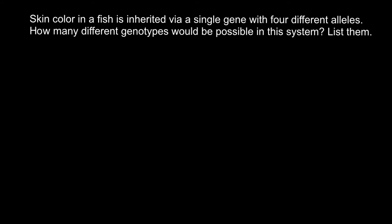Because we don't have too many alleles here, you can try to solve this problem by listing all the possible variants. So we have four different alleles. Let's name them allele A, B, C, and D.